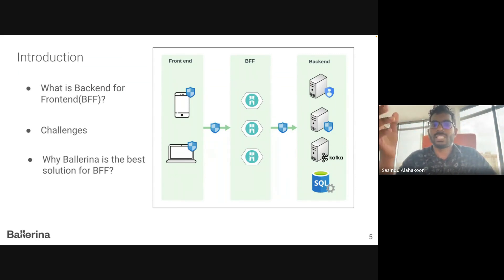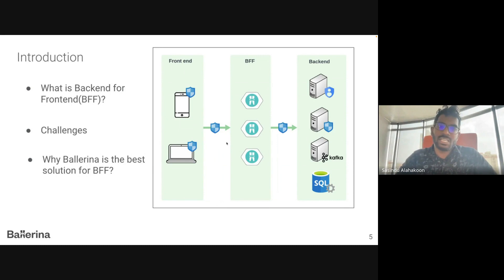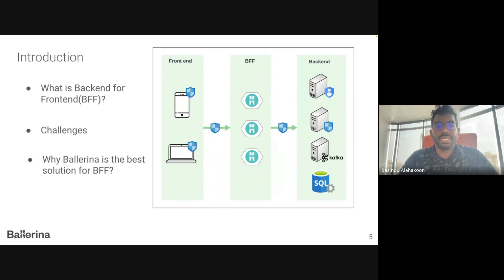Some applications like social chat apps use WebSocket for real-time data communication between server and front-end. Front-end applications should also exchange authentication and authorization details with back-end servers to ensure the security of the systems. Ballerina natively supports all of these communication scenarios — HTTP, GraphQL, WebSocket, and OAuth2 — using simple and intuitive programming constructs.